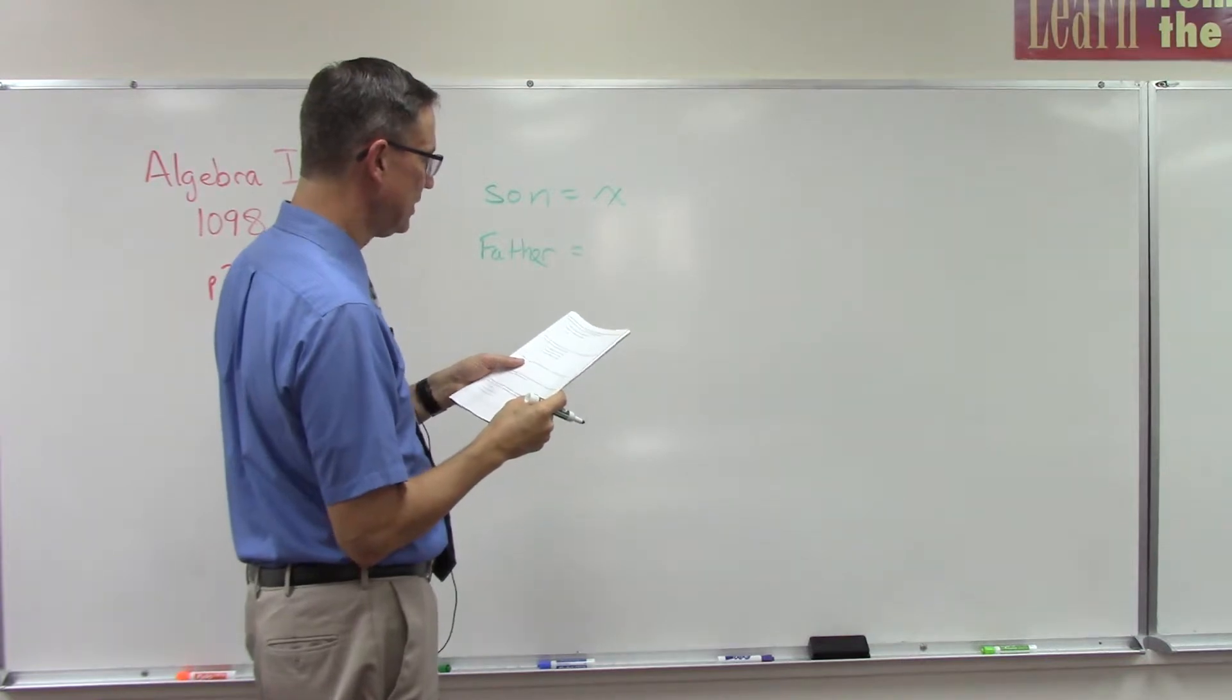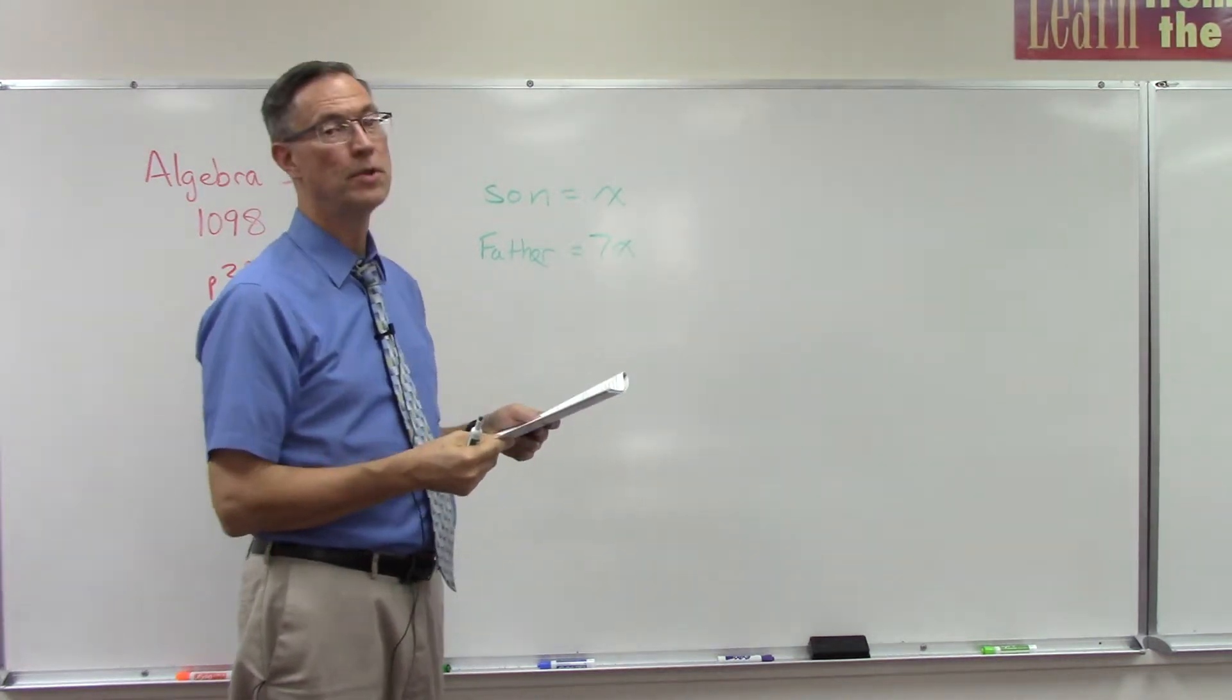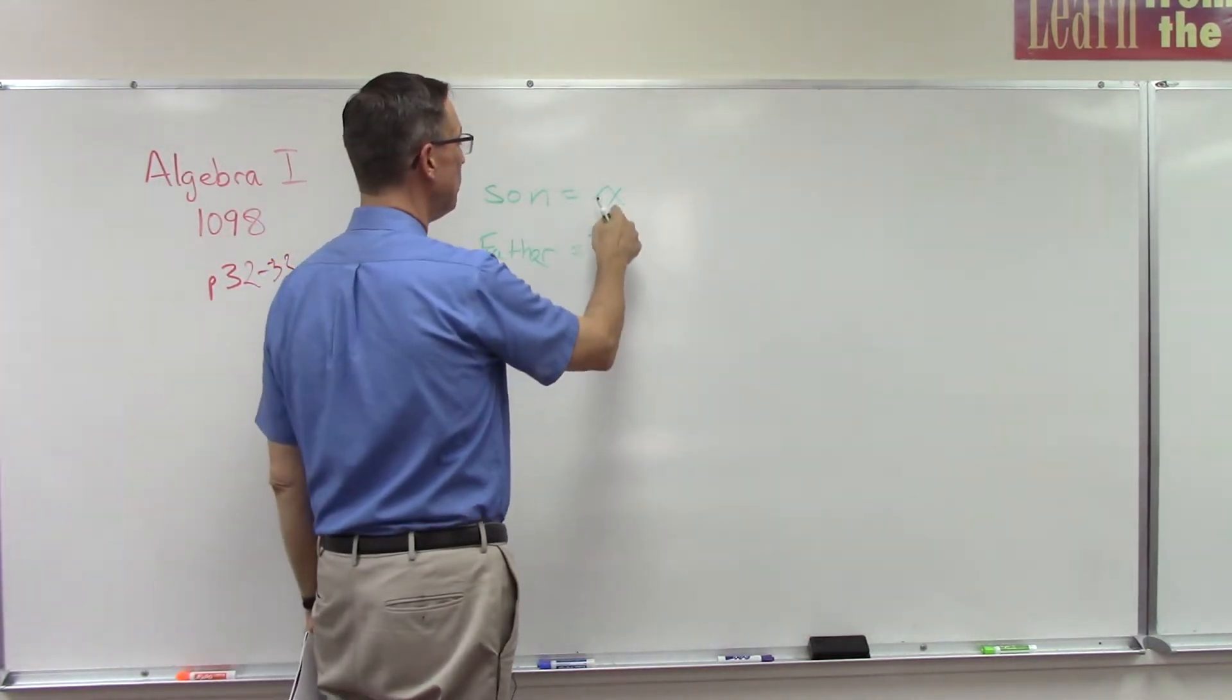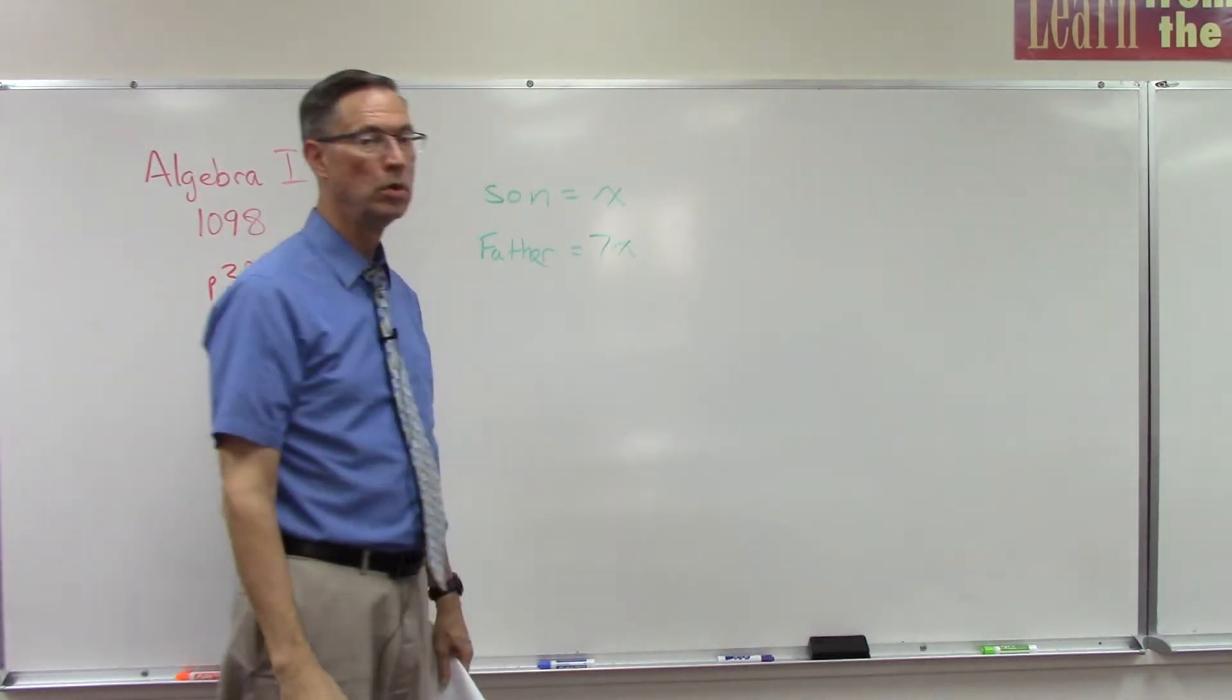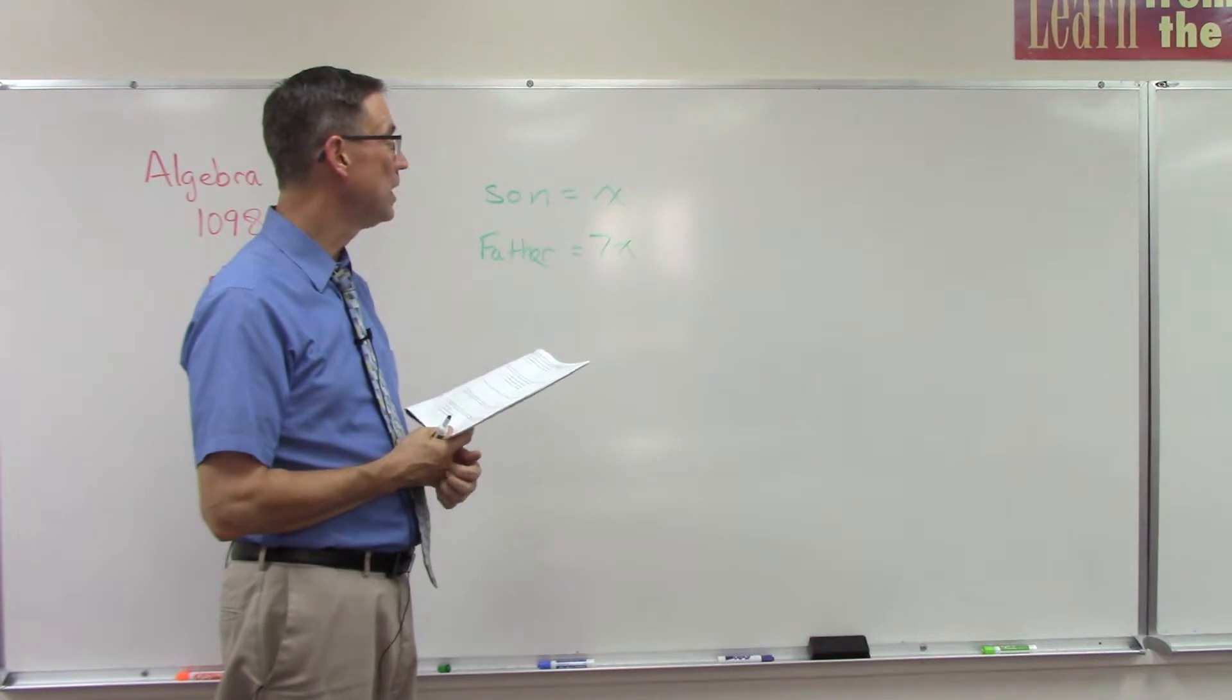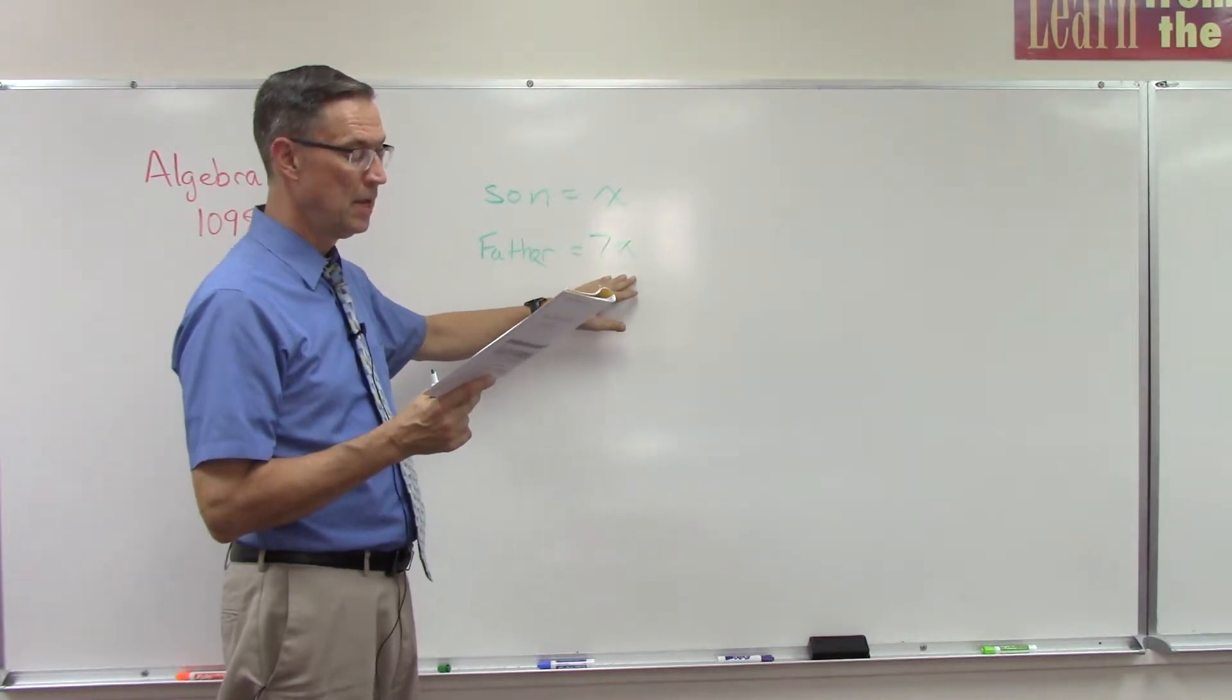The father, it says the padre is seven times, so seven x - seven times the age of his son. The sum of their ages is 56, so sum means addition. We can add these two together and have it equal to 56, and then go back and solve for x. You're not done once you know the age of the son - you're also supposed to go and figure out the age of the father.